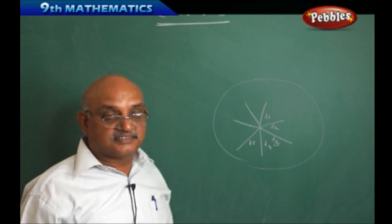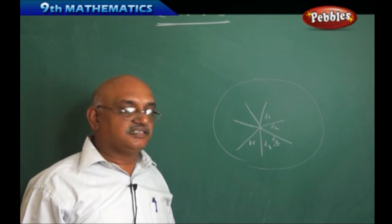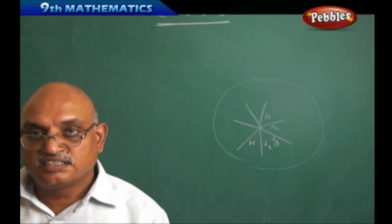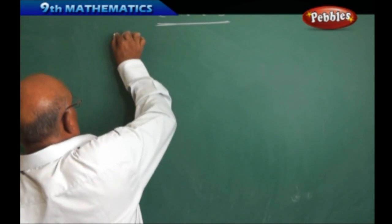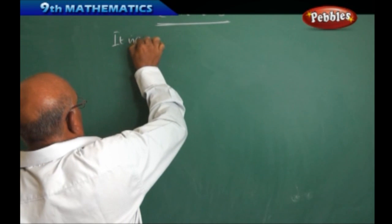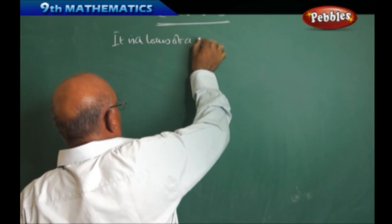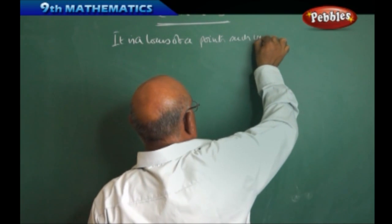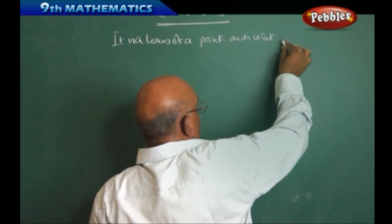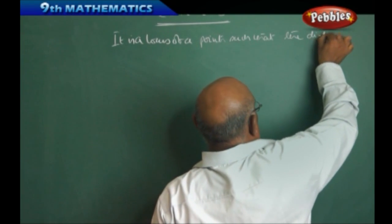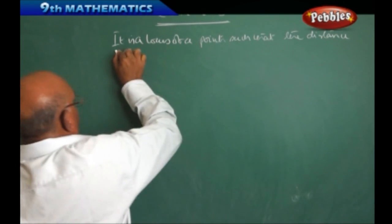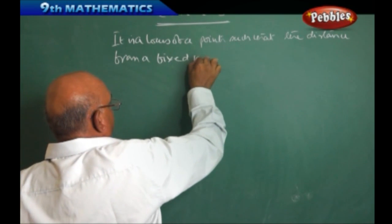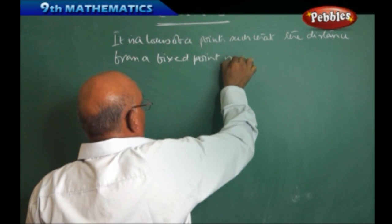Whenever the distances are the same, then we are calling it a circle. In a general definition, a circle is defined as the locus of a point such that the distance from a fixed point is constant.